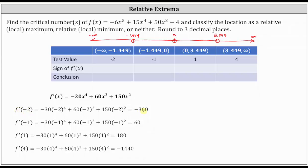f prime of negative 2 is negative, f prime of negative 1 is positive, f prime of 1 is positive, and f prime of 4 is negative. Because the first derivative is negative over the first subinterval, the function is decreasing there. The next subinterval has a positive derivative, so the function is increasing. The third subinterval also has a positive derivative, so the function continues to increase. For the last subinterval, the first derivative is negative, indicating the function is decreasing.